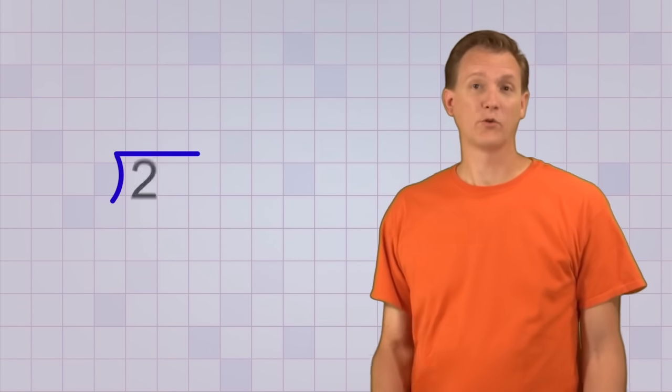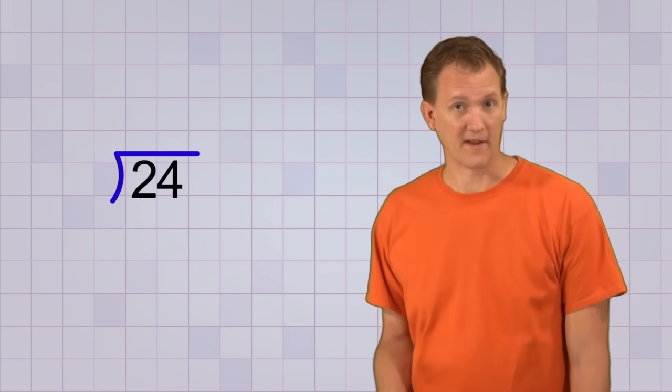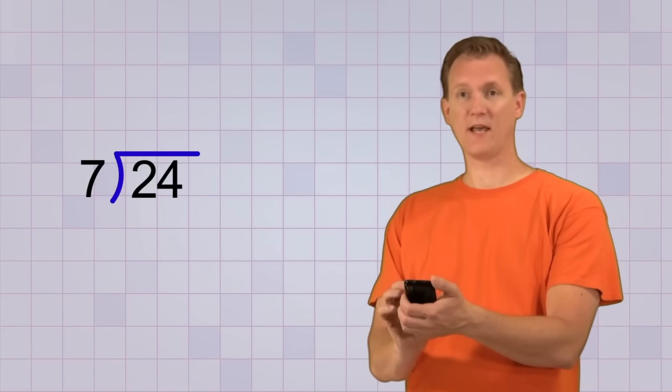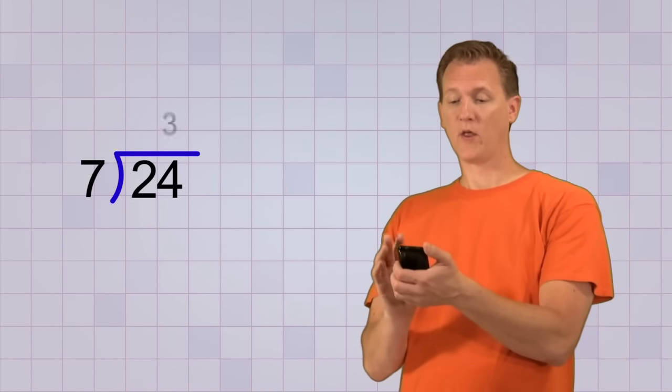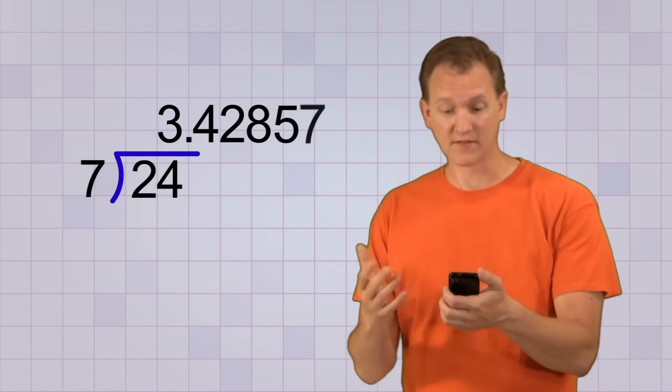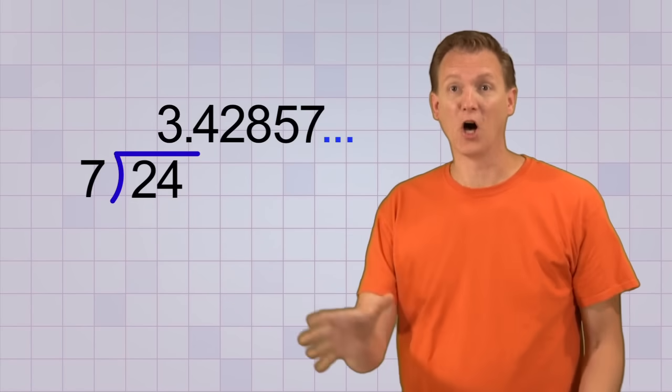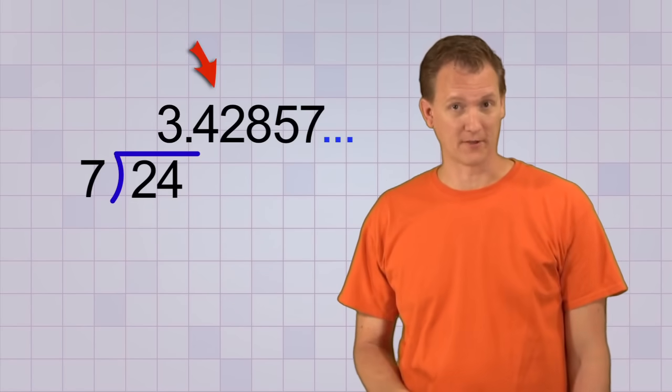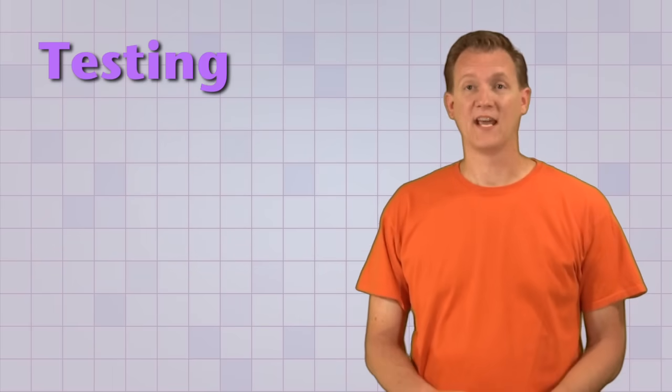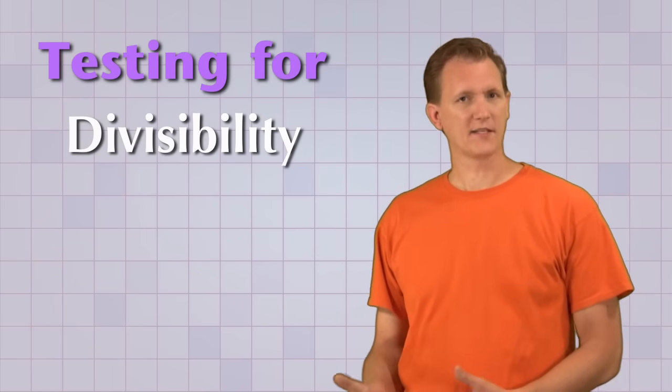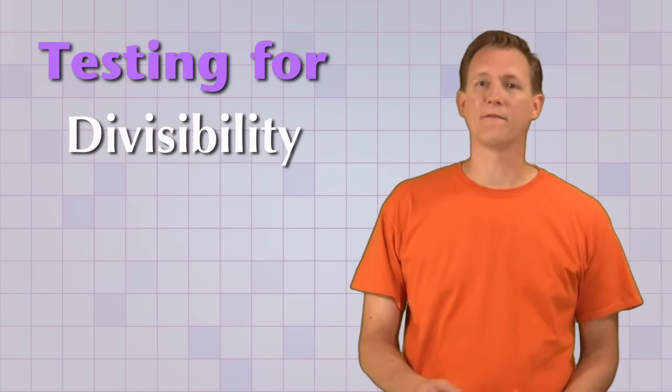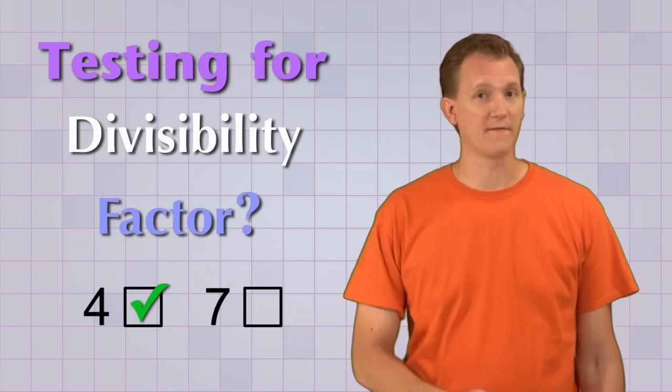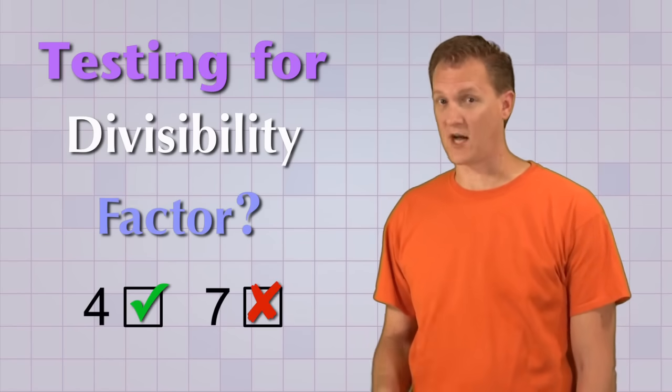But what if we try to divide 24 by a number that isn't one of our factors, like the number 7? If we try 24 divided by 7 on a calculator, we get 3.42857 blah blah blah, a long decimal number. That didn't divide in evenly because there's a big remainder. What we just did is called testing for divisibility. Testing for divisibility is a way to find out if a number is a factor of another number. With the test we just did, we confirmed that 4 is a factor of 24, but 7 is not.